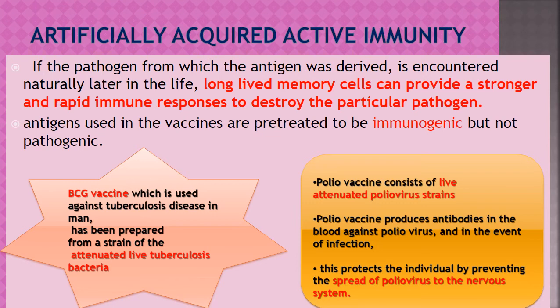Tuberculosis symptoms include fever and coughing lasting two to three weeks, blood in the sputum, chest pain, weight loss, fatigue, and chills. When a BCG vaccine is administered early in life, children develop antibodies in their body against this bacterium and are protected from the infection, so they don't develop tuberculosis.